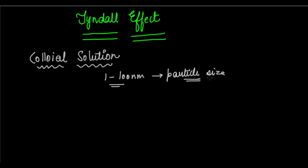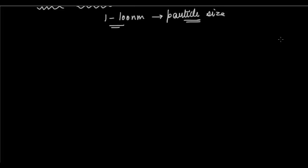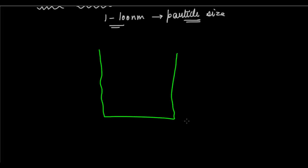A colloidal solution can be of gases, liquids, solid in liquid, liquid in solid, liquid in gas, or gas in liquid, and there are different names for each. Basically, in a colloidal solution, the particles have some considerable size. So if you take a beaker and put some liquid in it which has particles of considerable size — that is, 1 to 100 nanometers.